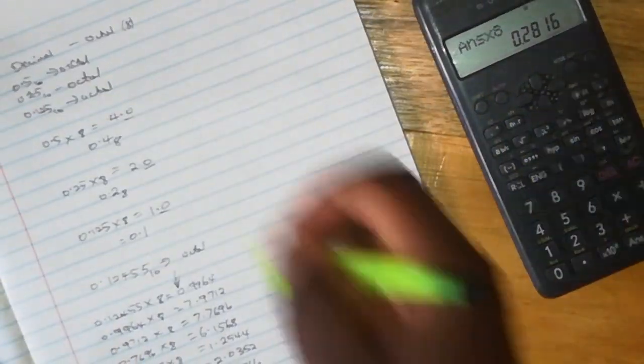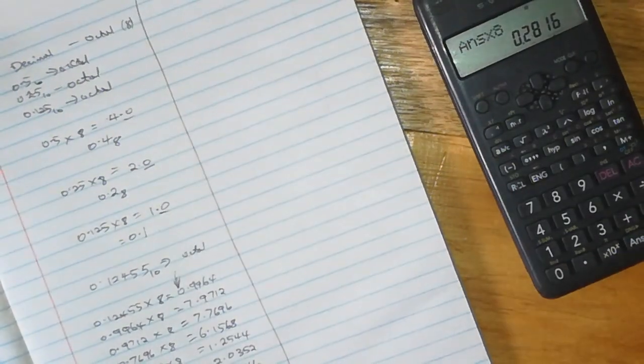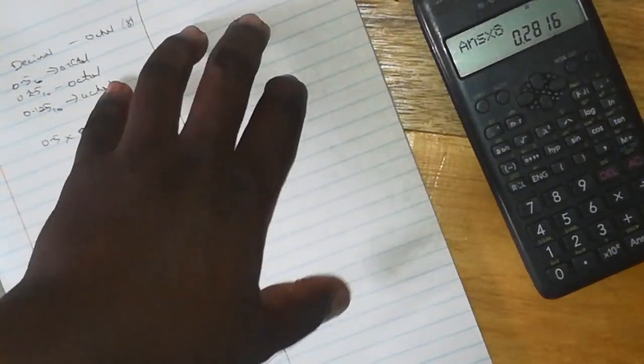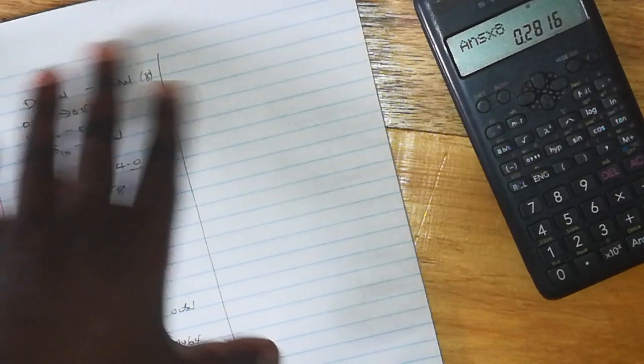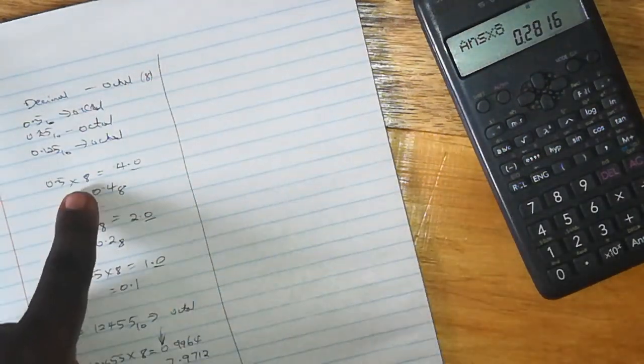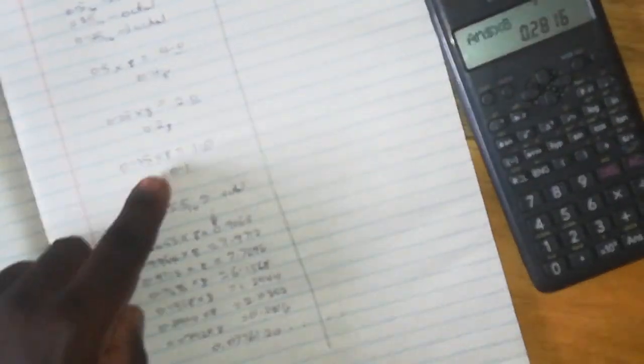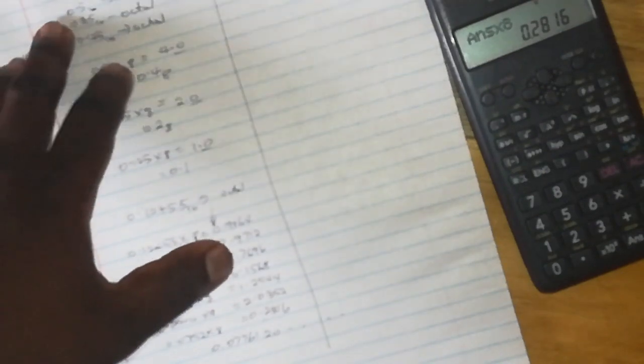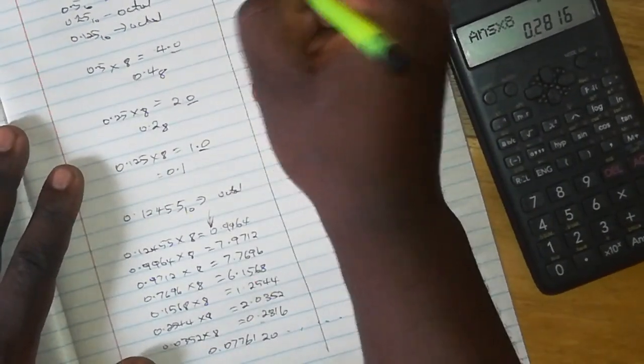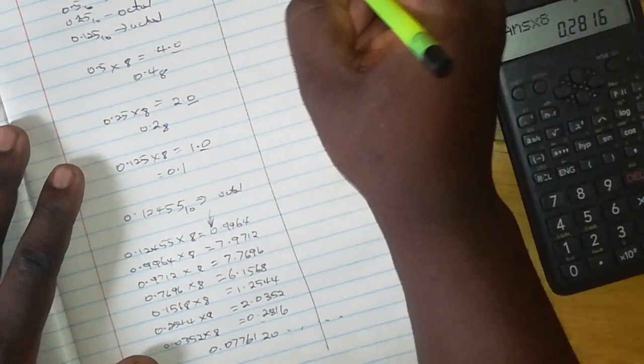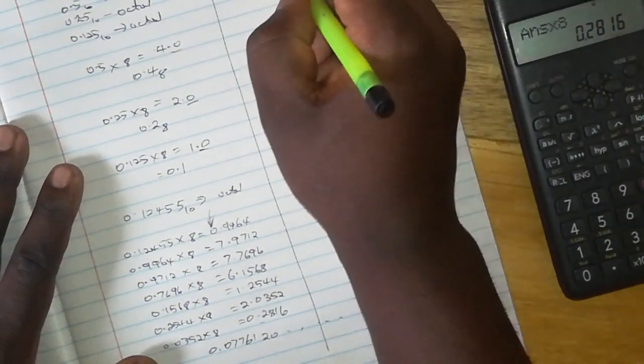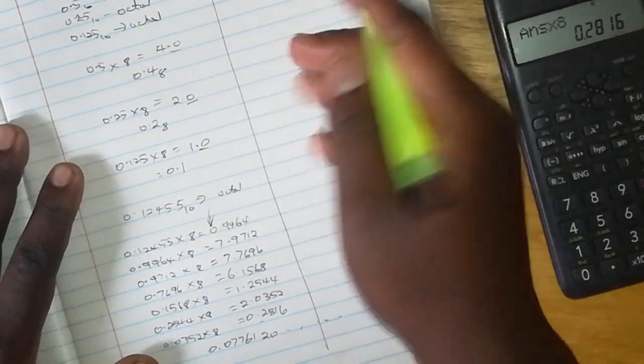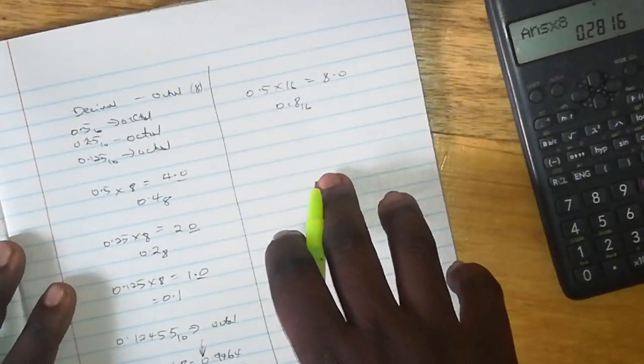Lastly, we want to look at how you can do the same conversion with the hexadecimal. And the procedure is the same, the difference is the base with which you are multiplying. So you take, for example, 0.5, you multiply that by 16, you get 8.0, and therefore your answer is 0.8 base 16.